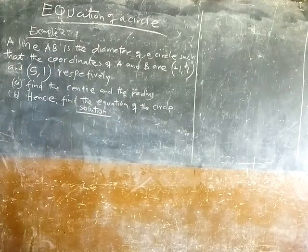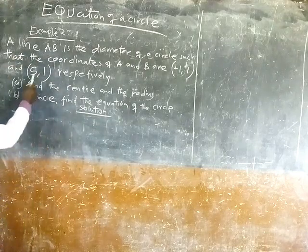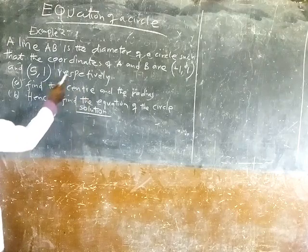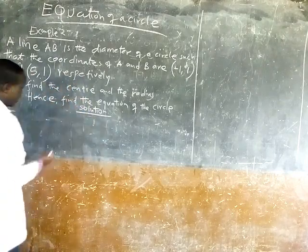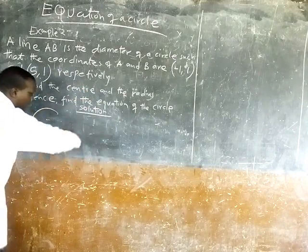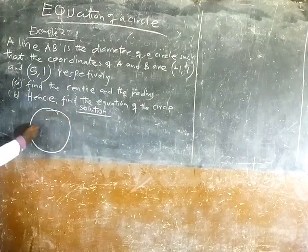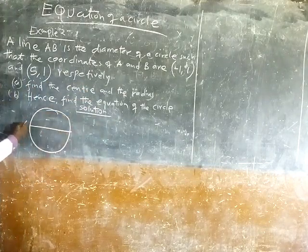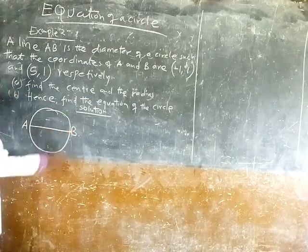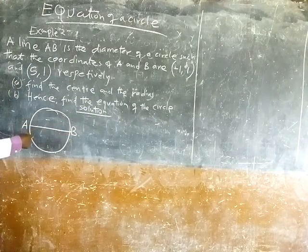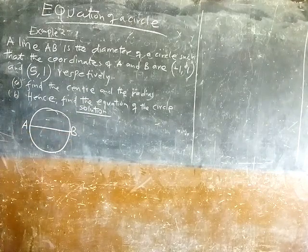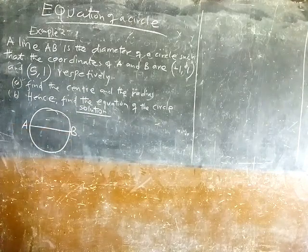A line AB is the diameter of a circle. The coordinates of A and B are given respectively. Find the center. So this is a circle, so the diameter. This is A and this is B.